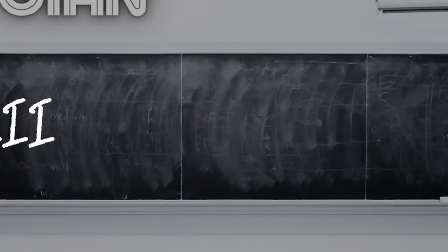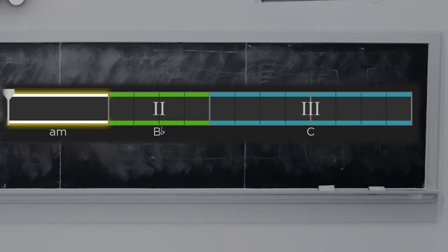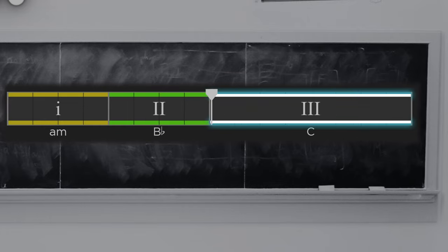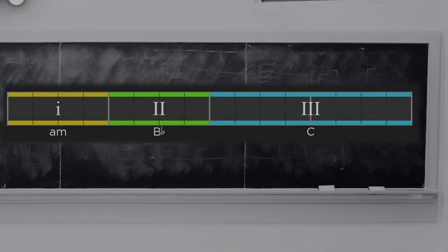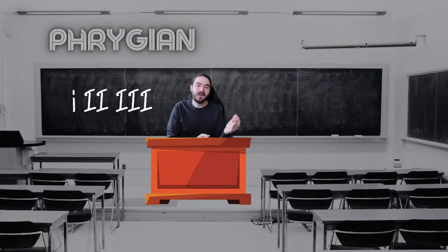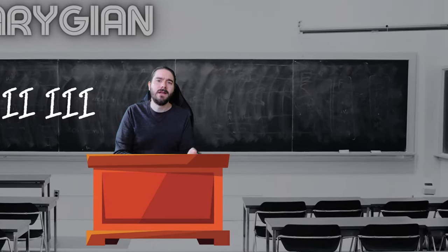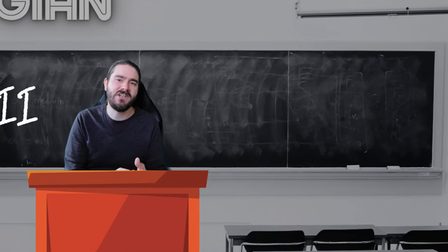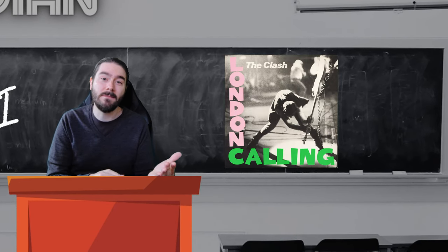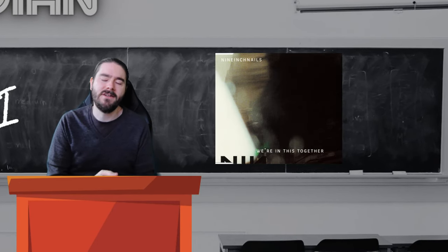Next is 1-2-3. This progression is more weighted towards major chords, but still has the undeniable Phrygian glue. Find it in London Calling by The Clash, and we're in this together by Nine Inch Nails.